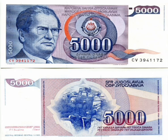Not because of its value, but because of the mistake that no one noticed from the beginning. Namely, next to the image of Tito is the year of his birth and death. Instead of from 1892 to 1980, the banknote read 1892 to 1930. So according to that banknote, Tito died 50 years earlier.